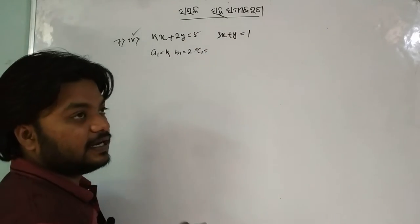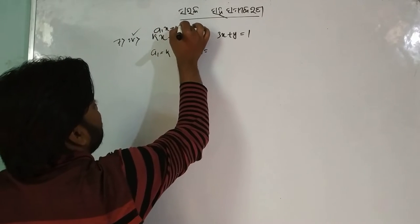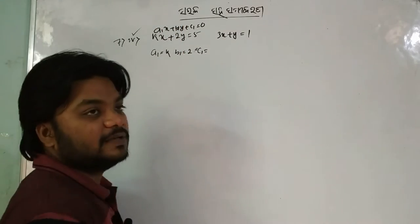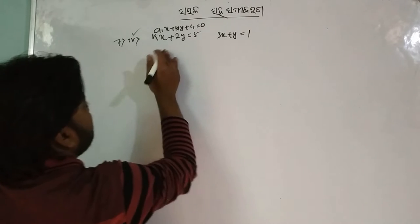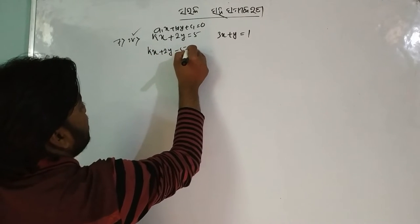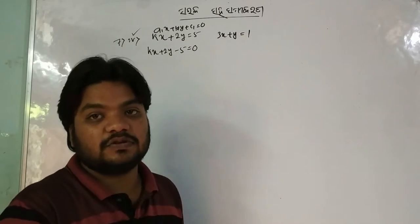Now we have a condition that A1x plus B1y plus C1 equals 0. It's Kx plus 2y minus 5 equals 0. We have to get this condition.